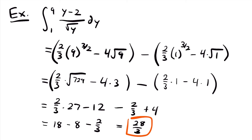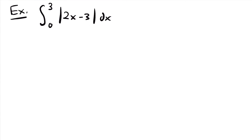And that would be the final answer to this definite integral. Let's look at one more final example. We have the integral from 0 to 3 of the absolute value of 2x minus 3 dx. This is a tricky one because we don't really know how to take the integral of an absolute value function. However, we can use one of the properties of integrals known as the additive interval property to solve this definite integral.